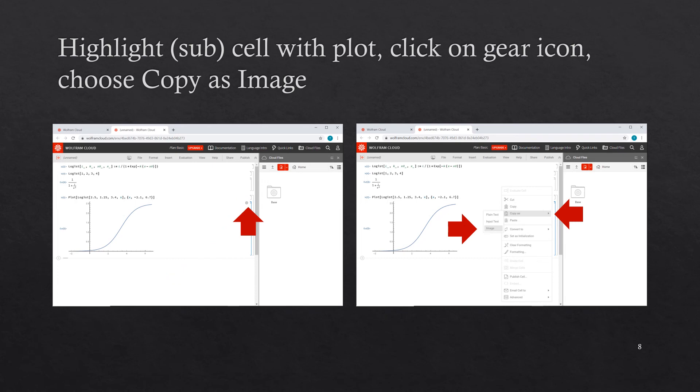We can save this plot as an image and maybe move it over to a Word document. So let's click in the cell or the sub-cell that has the actual plot, and then a little gear icon will appear. We can click on that and then we can use the menu to copy as an image and then paste wherever we want, say in Word.